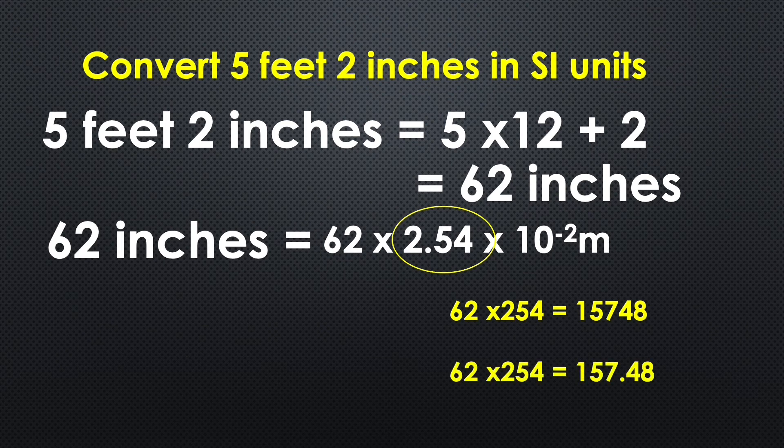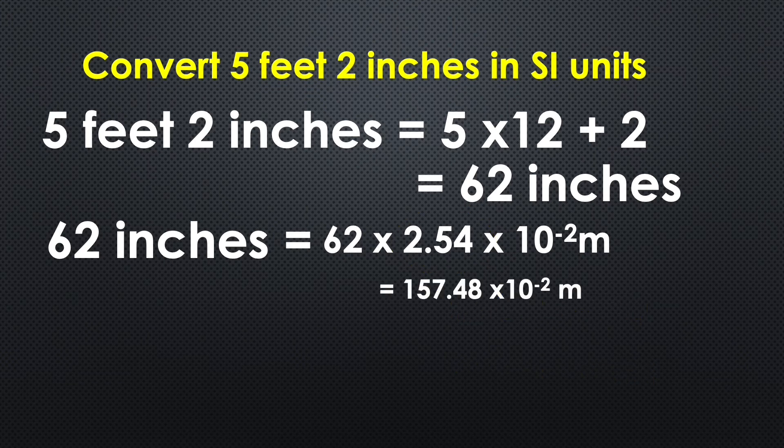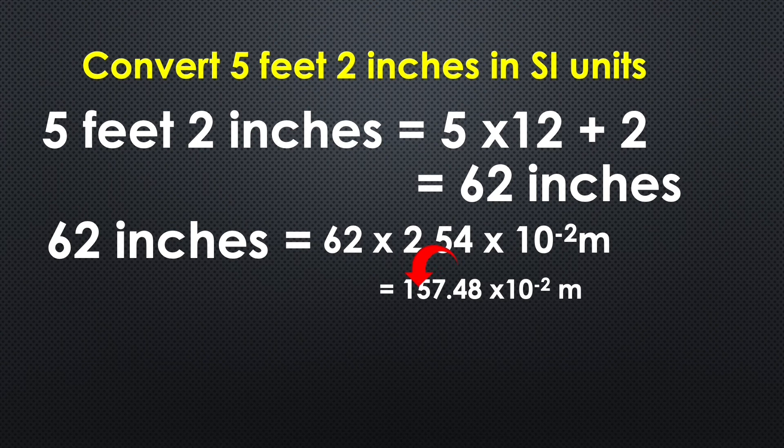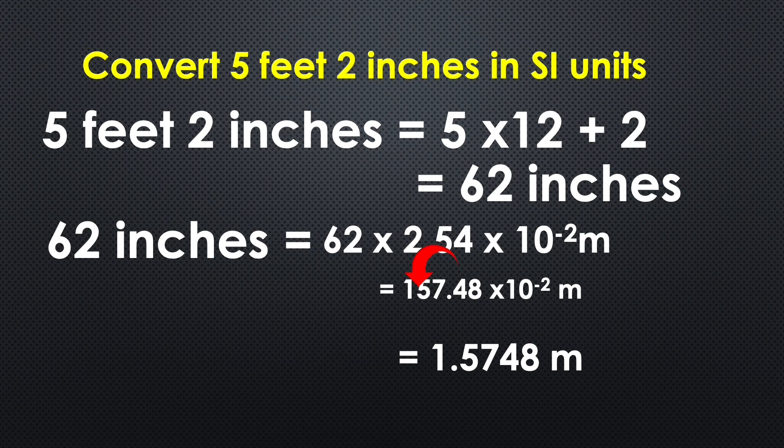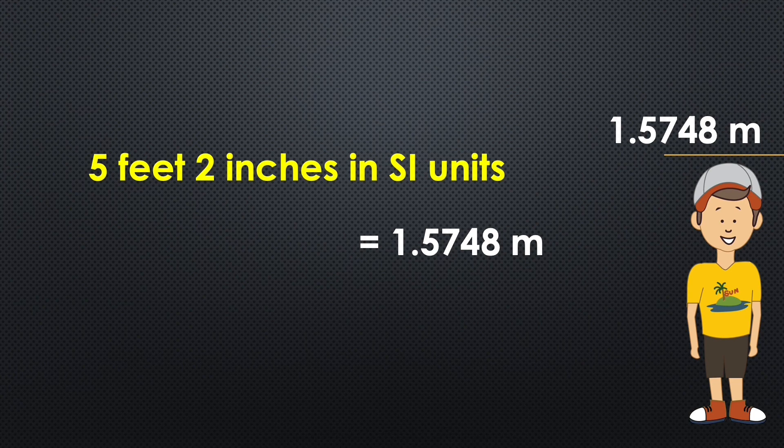We will be able to multiply the decimal point. For writing that decimal point, look out for the number which contains less significant figures. That means 2.54 has three significant figures, so write the decimal point after three numbers. Then to write the scientific notation, 10 raise to minus 2 meter, bring the decimal point two places to the left and you will get the answer 1.5748 meter.